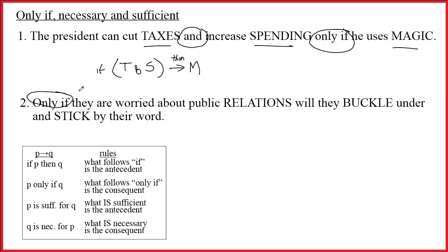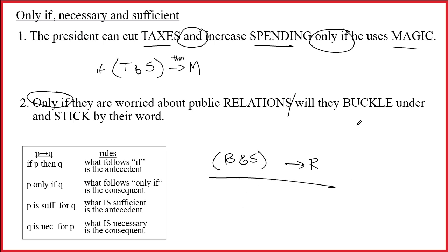Next sentence is another only if: 'Only if they're worried about public relations, will they buckle under and stick by their word.' The sentence says only if they're worried about public relations — and then here's what's related to that — that they'll buckle under and stick by their word. What follows only if is the consequent. R is following it, and then 'buckle under and stick by their word' is the antecedent. So the only if is the main connective.